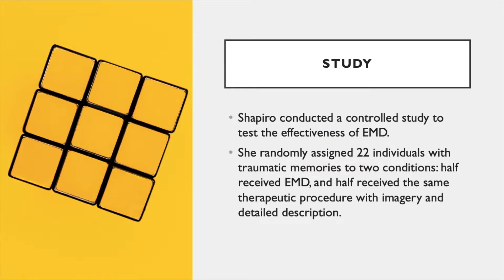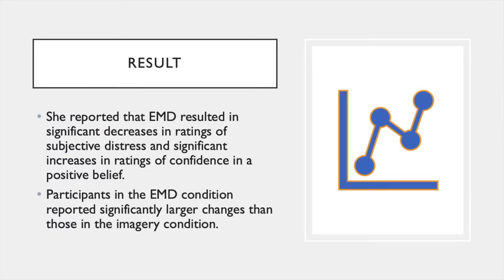Shapiro conducted a controlled study to test the effectiveness of EMD. She randomly assigned 22 individuals with traumatic memories to two conditions — half received EMD and half received the same therapeutic procedure with imagery and detailed description. She reported that EMD resulted in significant decreases in ratings of subjective distress and significant increases in ratings of confidence in a positive belief. Participants in the EMD condition reported significantly larger changes than those in the imagery condition.